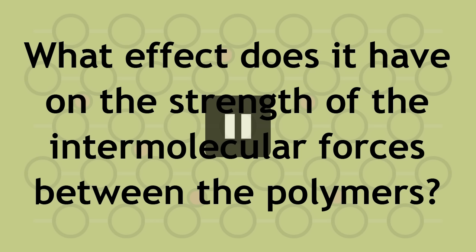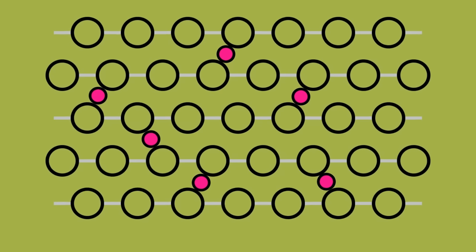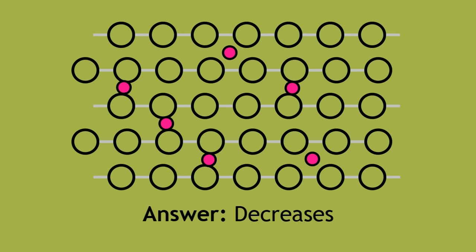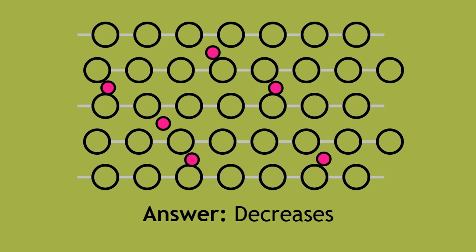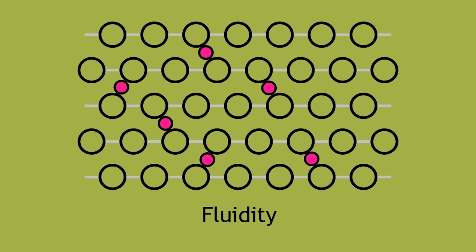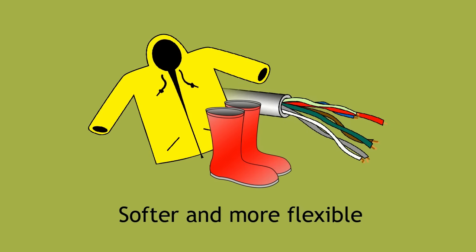Please pause the lesson, think about this, and resume when you are ready. As the polymer chains are further away from one another, the strength of the intermolecular forces of attraction decreases. The polymer chains are also able to slide over the plasticizers, so there is fluidity to the structure. This makes the overall structure softer and a lot more flexible.